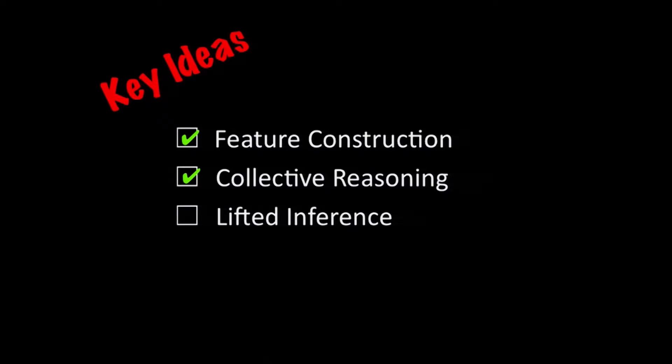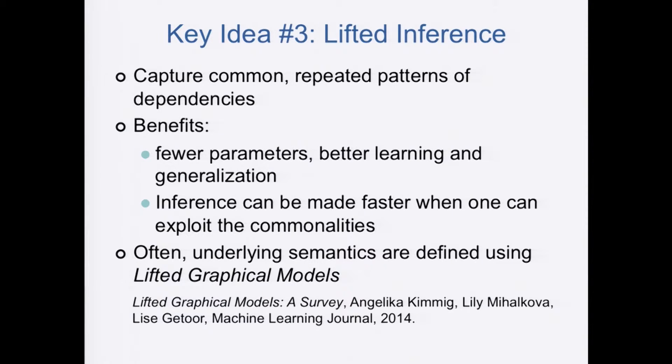It's hard because you have outputs that depend on each other and we need scalable ways of doing this. The last key idea is lifted inference — the idea that when we have a big graph, we don't want the parameters to blow up with the graph's size. We want to capture common patterns of interaction. HMMs do this for sequences; for rich graphs it's really interesting and challenging. There are approaches from the statistical relational learning community that have tried to do this.